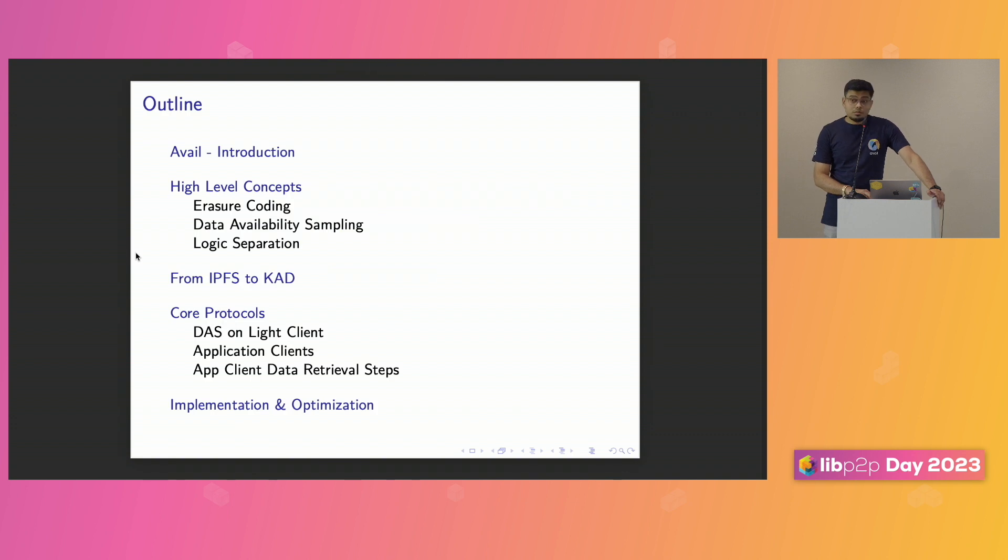So the brief agenda is we will introduce Avail and then go through the high-level concepts of what is erasure coding, how data availability sampling works, the logical separation that we have done, and then why we transformed from IPFS to Kademlia, and then go through some of the core protocols like the data availability sampling on light clients, the application clients, application specific data retrieval, and some of the optimizations.